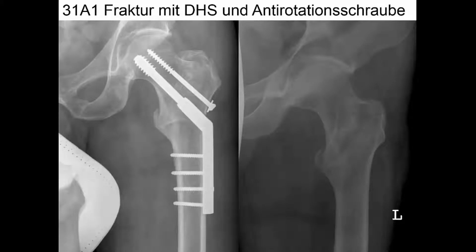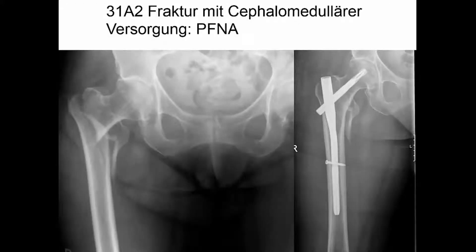Diese Röntgenbilder zeigen beispielhaft die Versorgung einer 31-A1-Fraktur mittels dynamischer Hüftschraube und Antirotationsschraube. Dieses klinische Beispiel zeigt eine 31-A2-Fraktur. Da dieser Bruch mehrfragmentär ist, ist er eher instabil und erfordert die Versorgung mittels cephalomedulärem System.